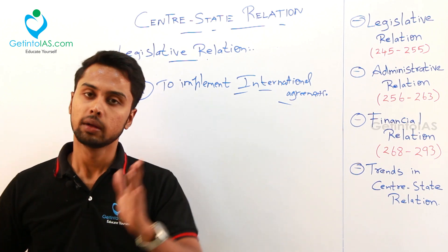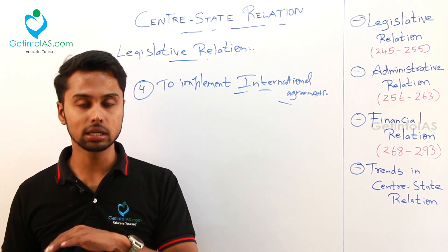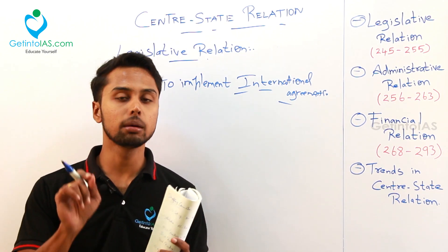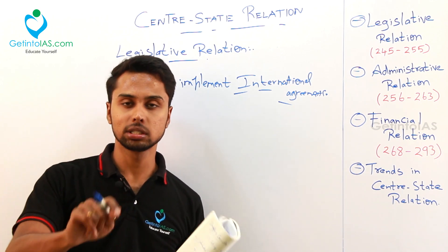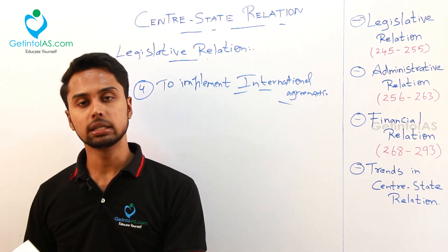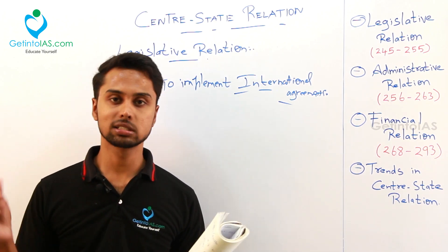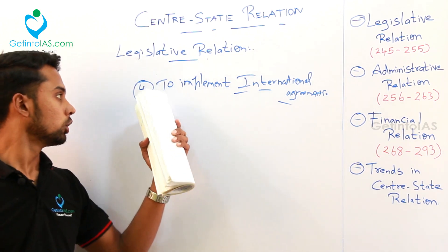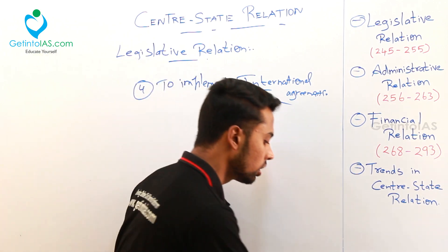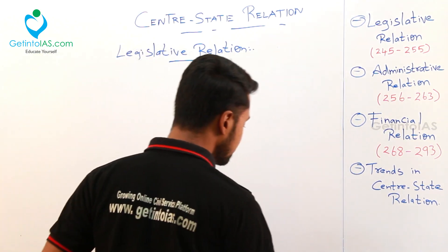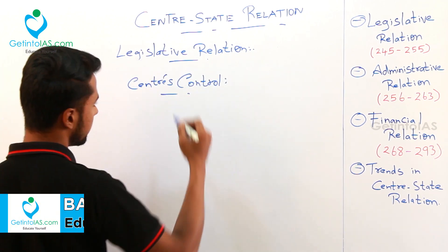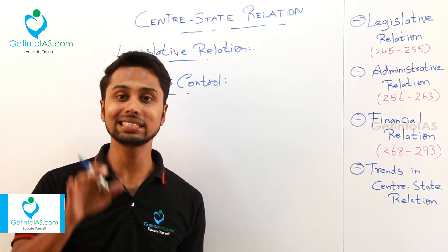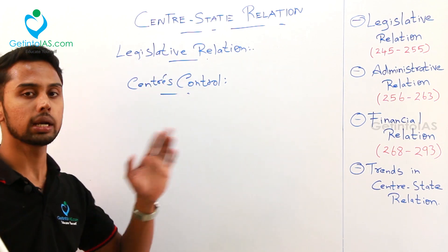Unitary features include a strong center — India is having a strong center. The judiciary will be dependent on the center, because your state high court judges are appointed by the center. Your state public service commission chairman are appointed by the governor but can be removed only by the president. Your state election commissioner is also appointed by the governor but can be removed only by the president. So in every department, there is an intrusion of the center.